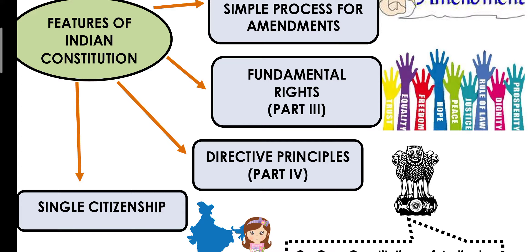Restrictions exist to protect public policy, public order, public morality, and public decency. Sometimes your fundamental rights may be suspended, but only for the benefit of everyone. Fundamental rights are not absolute — restrictions can come in — but those restrictions will be in the interest of the general public. Similarly, right to speech: nobody can prohibit me from speaking, but if my speech becomes abusive or creates a riot between communities, I will be restrained because it is affecting the general public.